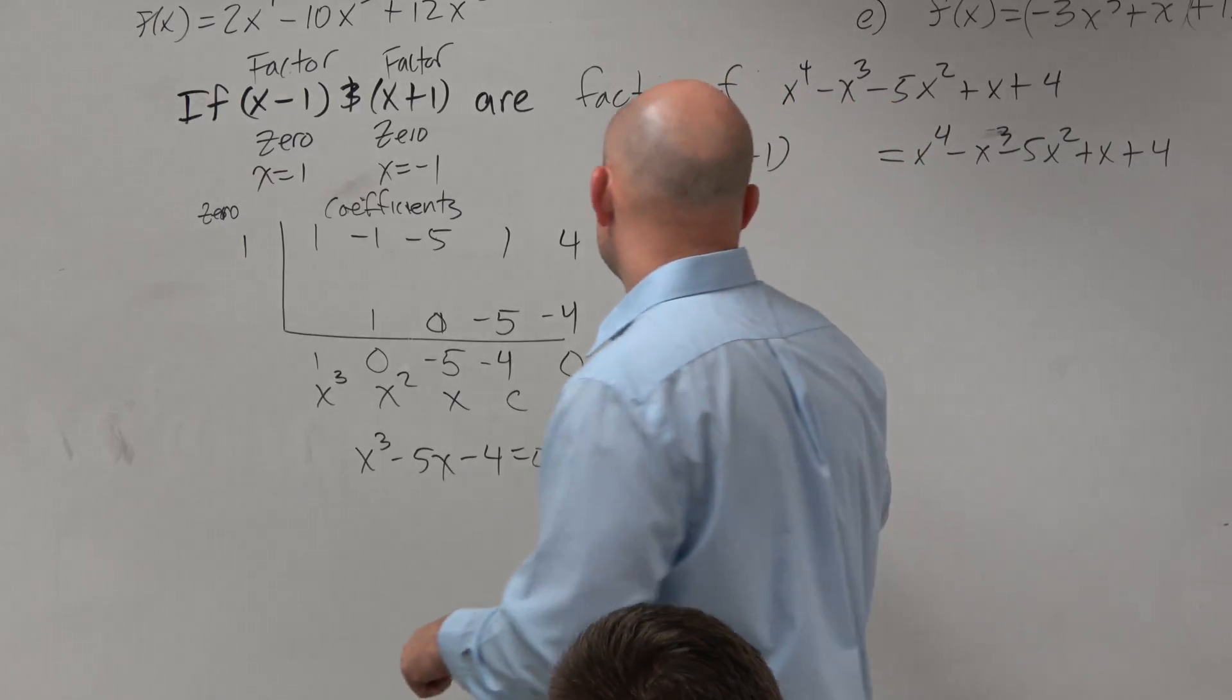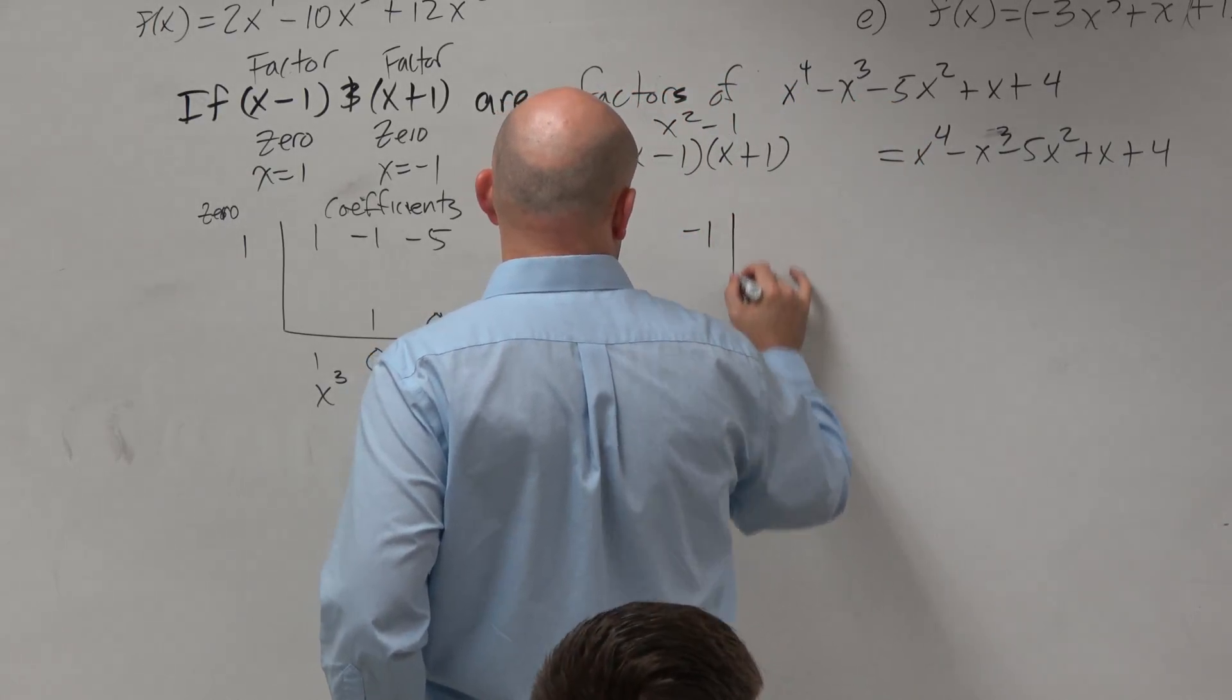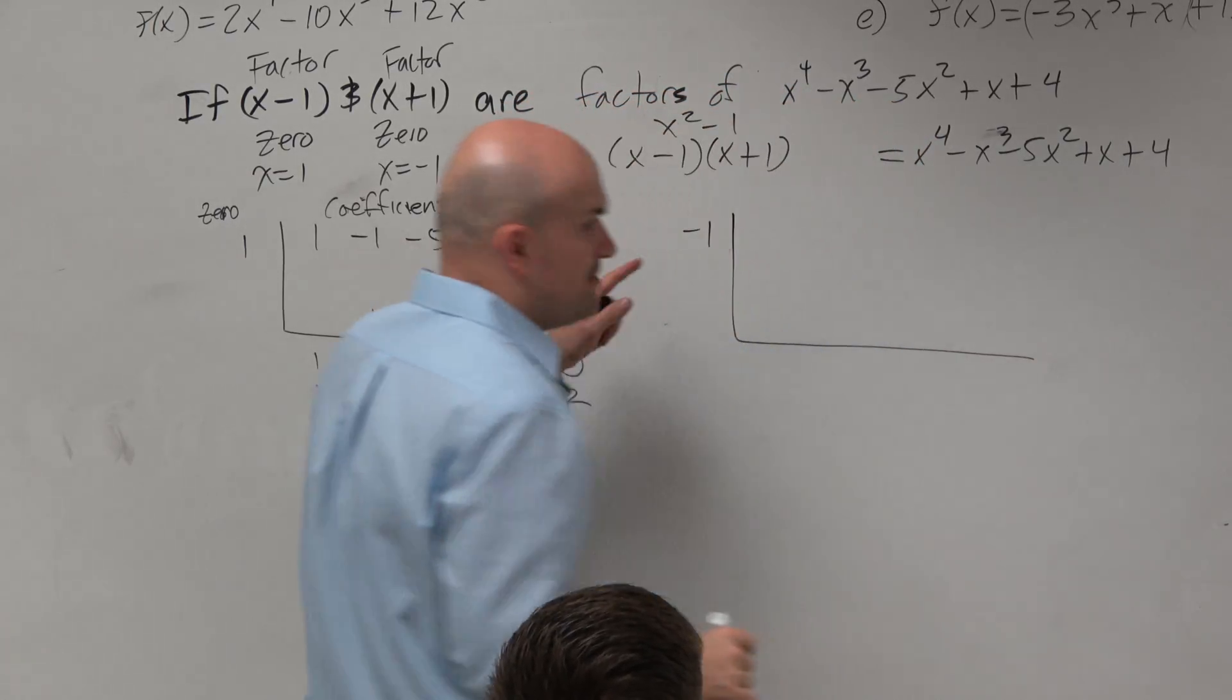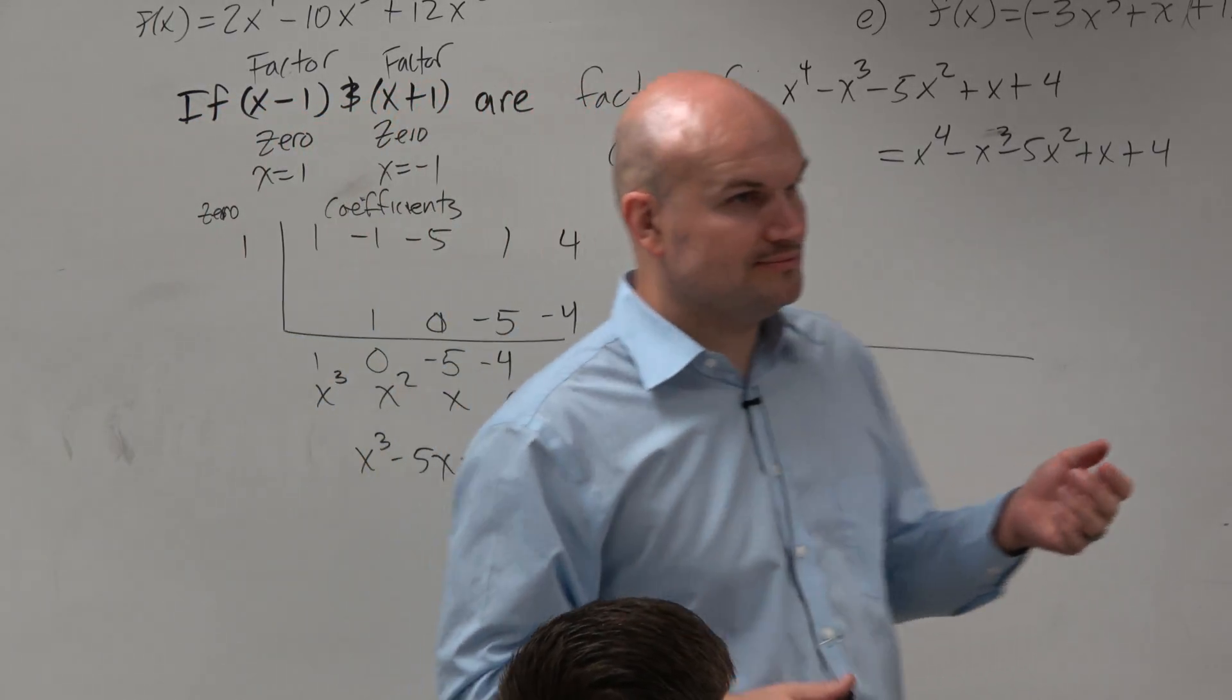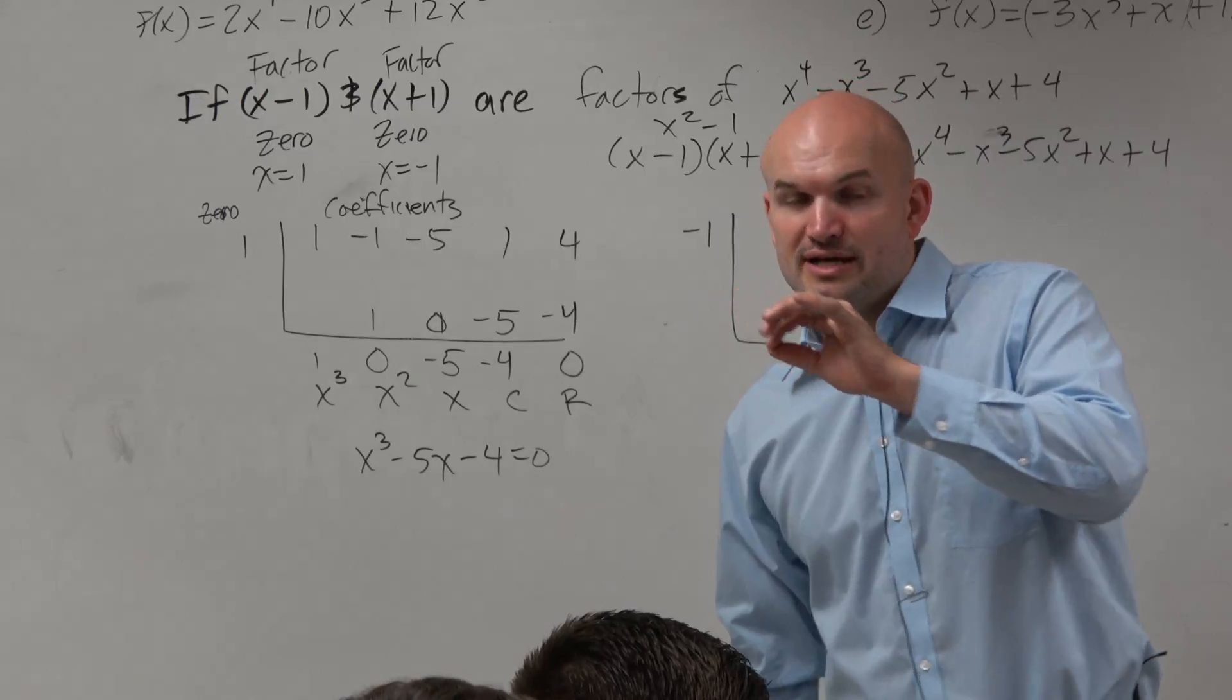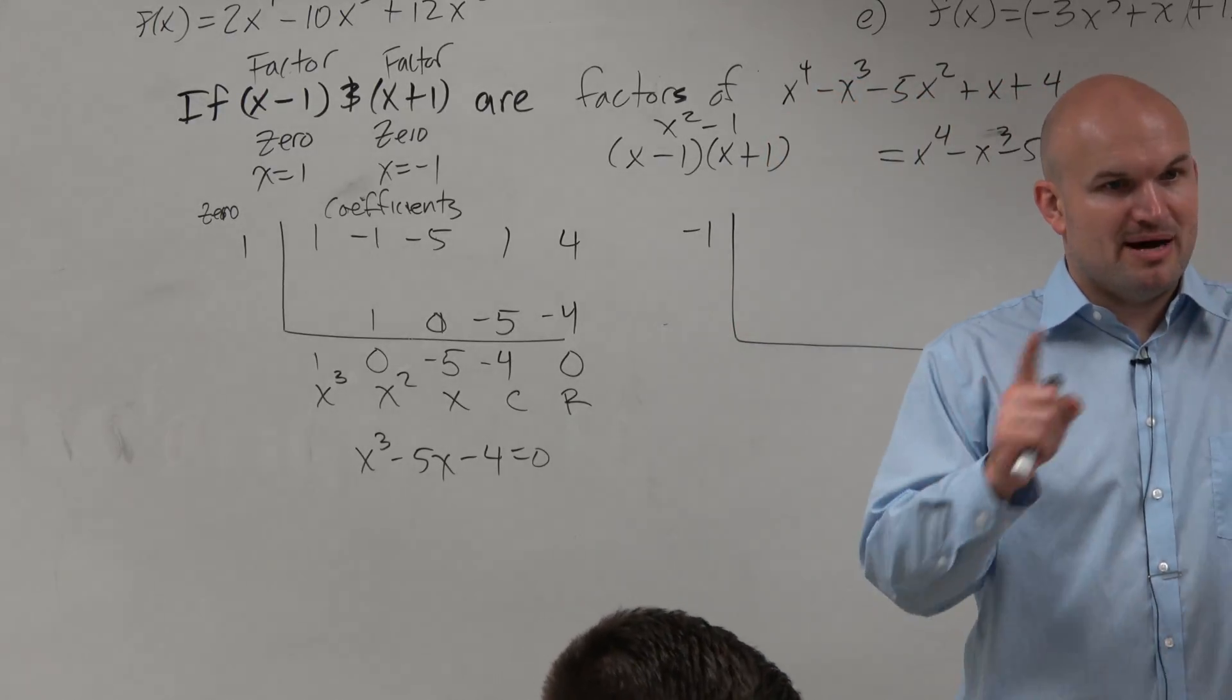Now, be careful, because the biggest mistake students make is they take the 0 negative 1 and they divide the same polynomial again. Guys, we don't want to do that. We don't want to take our polynomial and divide it by both of our factors.